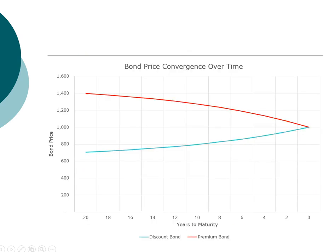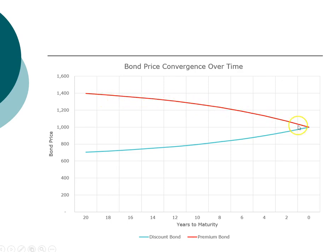We can plot the bond's price over time. For a discount bond, as years to maturity decreases, the bond's discount decreases and the price approaches the face value. The opposite is true for the premium bond — as time goes on, the size of the premium goes down, and the price converges toward the face value. On maturity day, since all coupon payments have already been made and the only cash flow left is the face value, both bonds will sell at par.